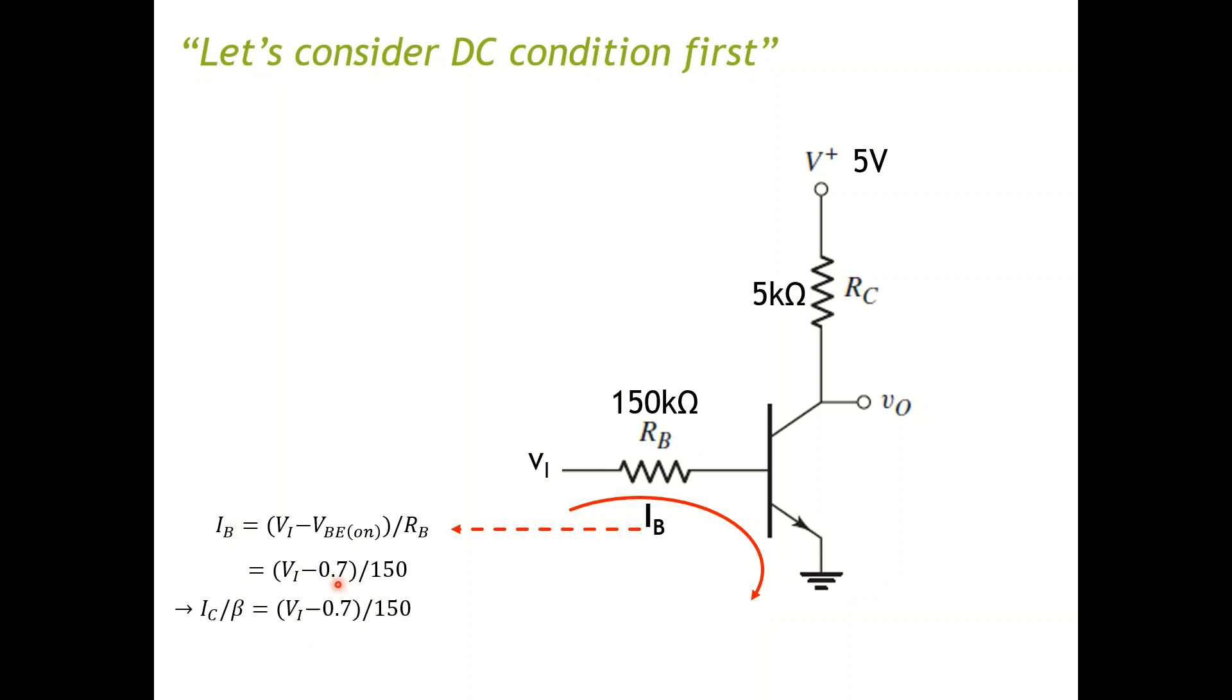So I'm plugging in my numbers. Now I also know that IB equals IC over beta, or another word is the linear relationship between IC and IB. So IC equals beta times IB. So I plug that in here. Now I can actually do some math and calculate my IC based on my VI, my input voltage.